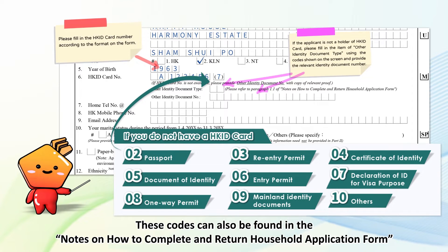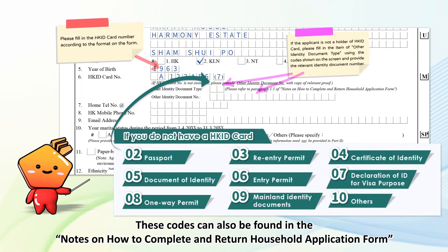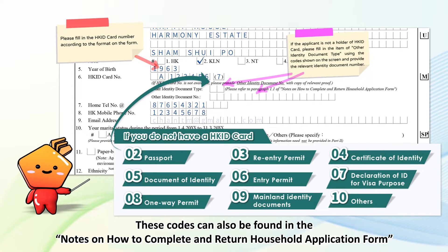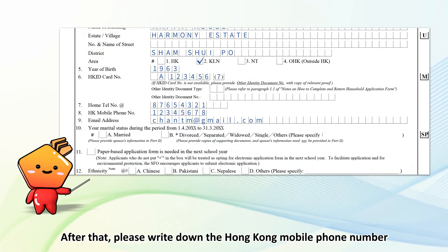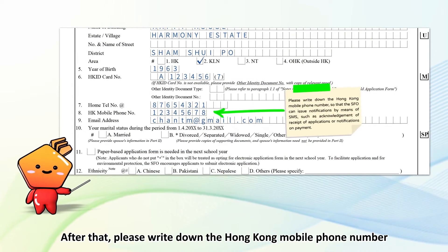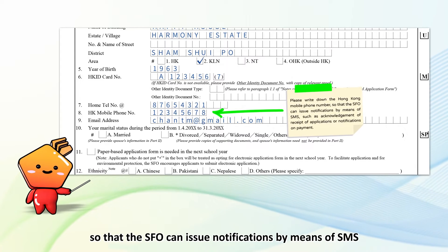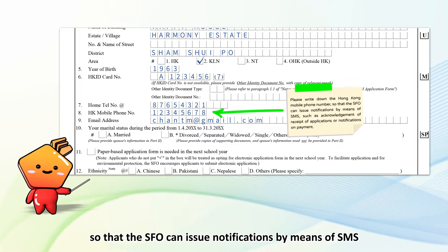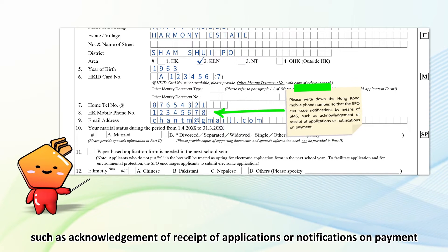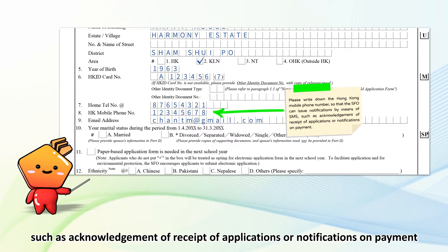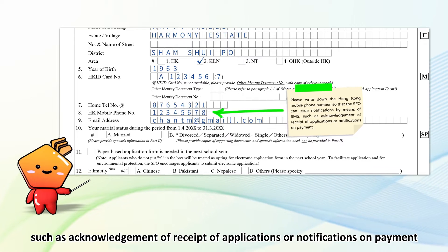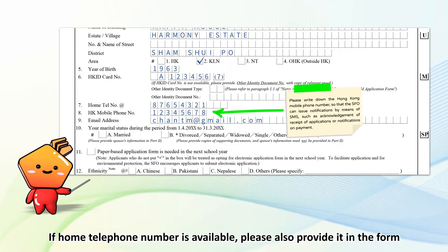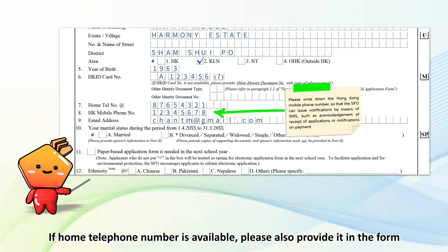These codes can also be found in the Notes on How to Complete and Return Household Application Form. After that, please write down the Hong Kong mobile phone number, so that the SFO can issue notifications by means of SMS, such as acknowledgement of receipt of applications or notifications on payment. If a home telephone number is available, please also provide it in the form.